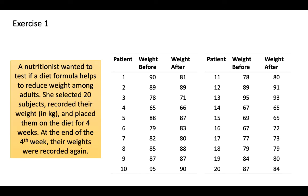Let's take a look at exercise number one. A nutritionist wanted to test if a diet formula helps to reduce weight among adults. She selected 20 subjects, recorded their weight in kilograms, and placed them on a diet for four weeks. At the end of the fourth week, their weights were recorded again. We have 20 patients and 40 observations.